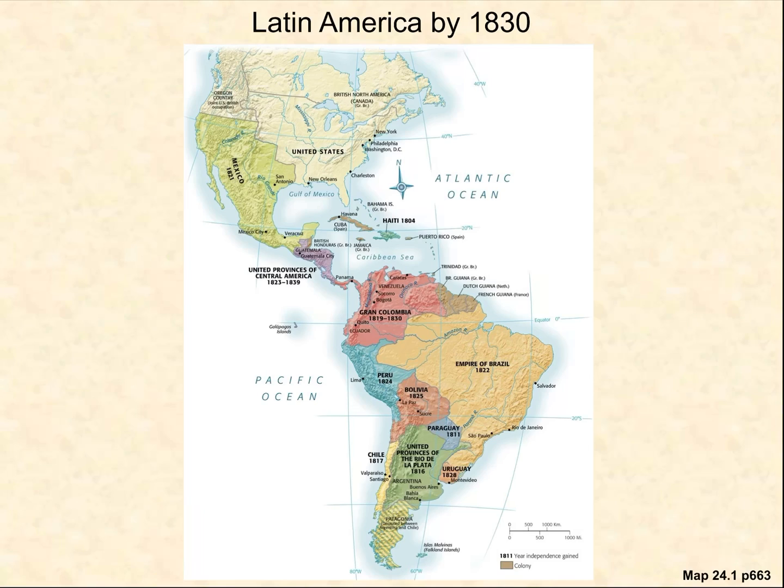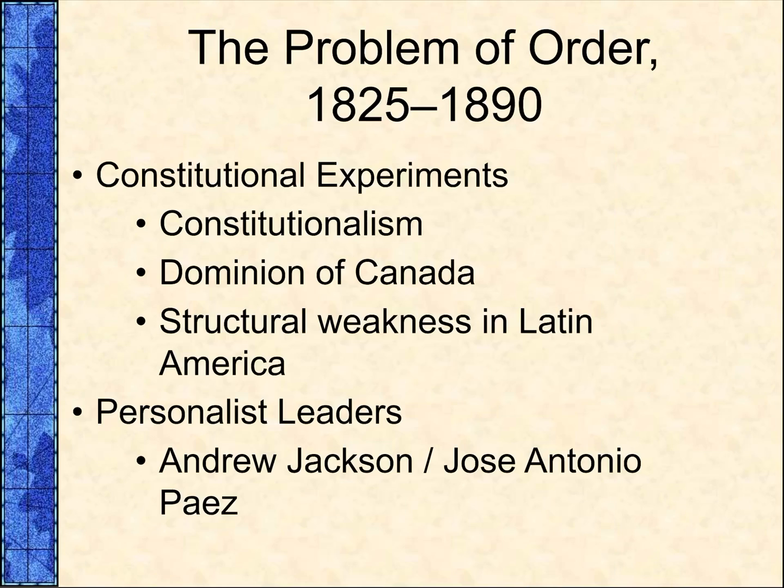Looking at the map, Mexico is much larger than what we think of today. You can see Gran Colombia in northern South America — what Bolívar tried to establish — along with Brazil and some of the other major countries that emerged during this period of independence.